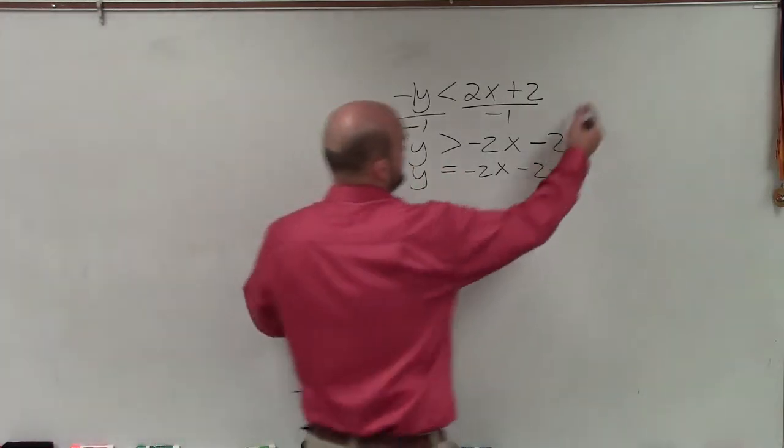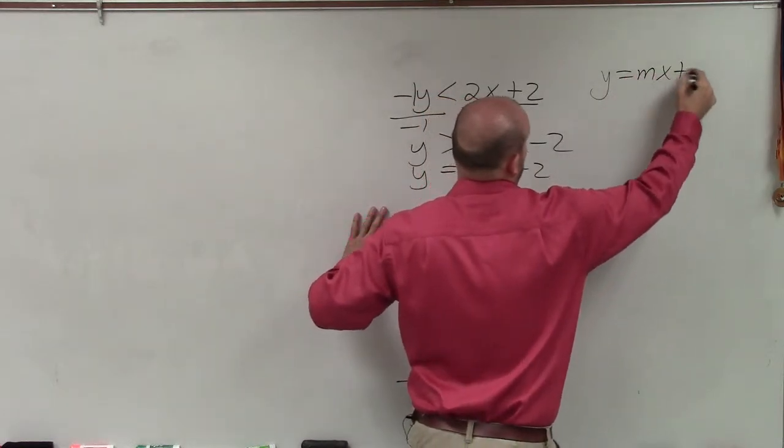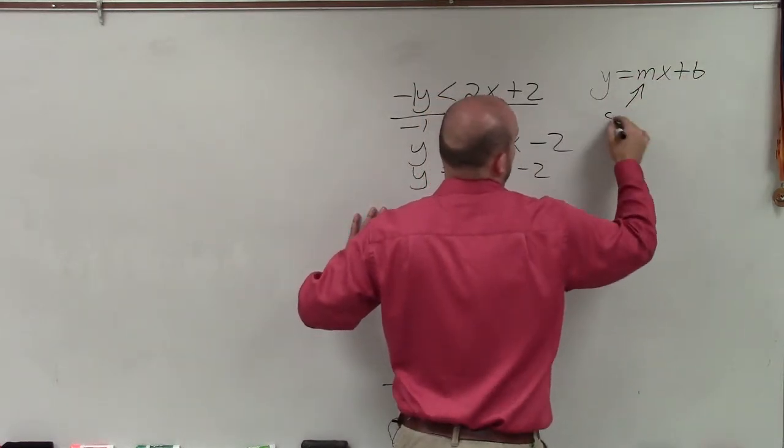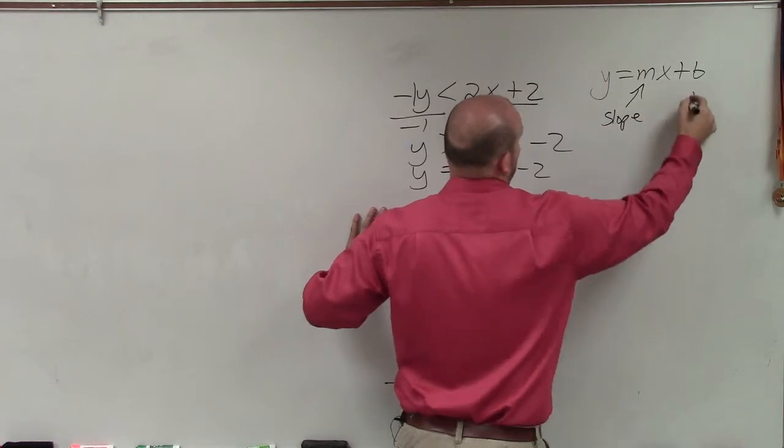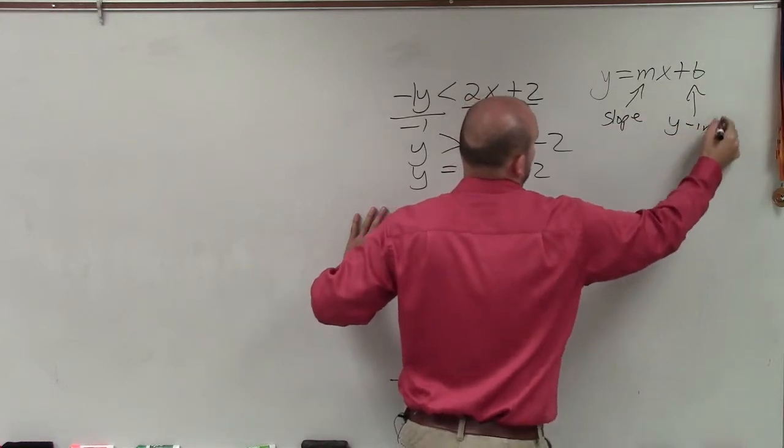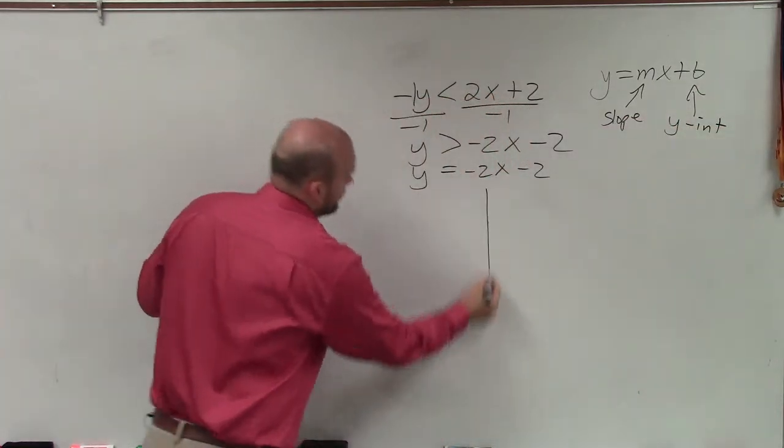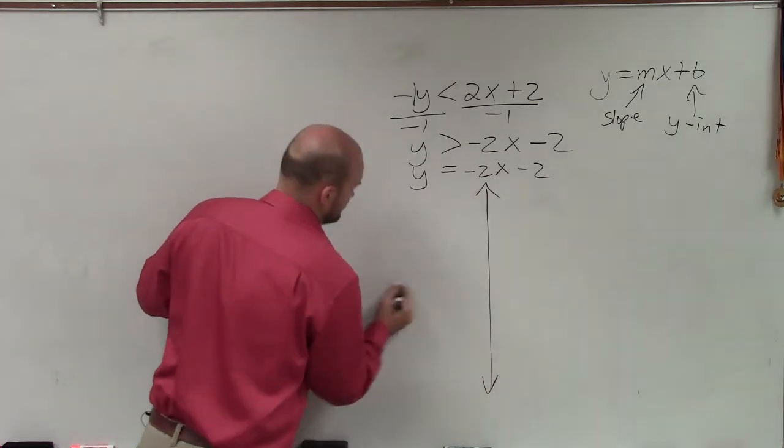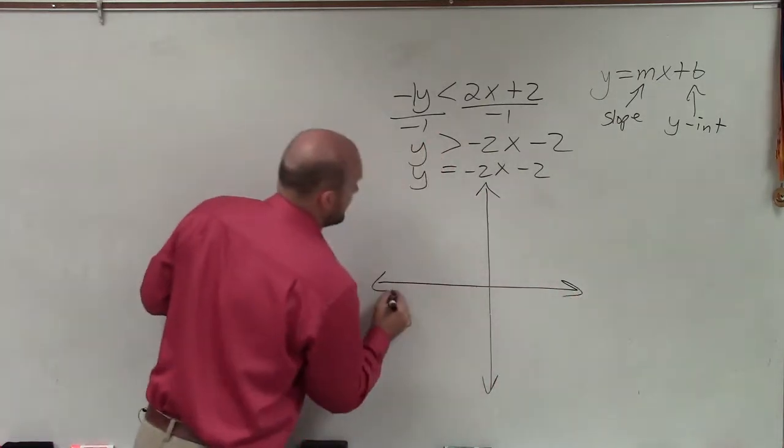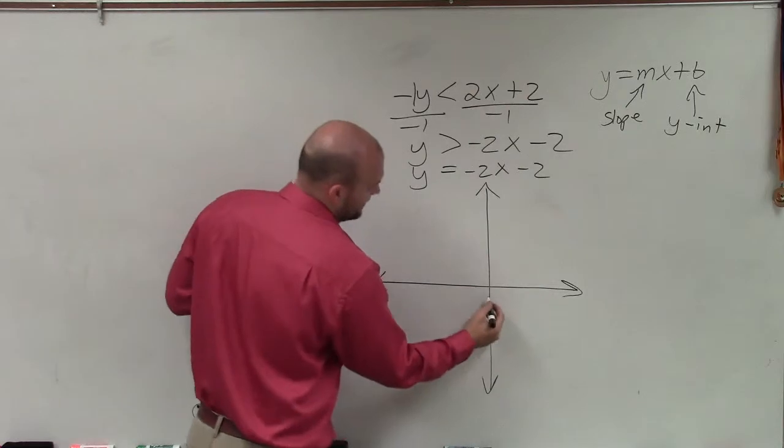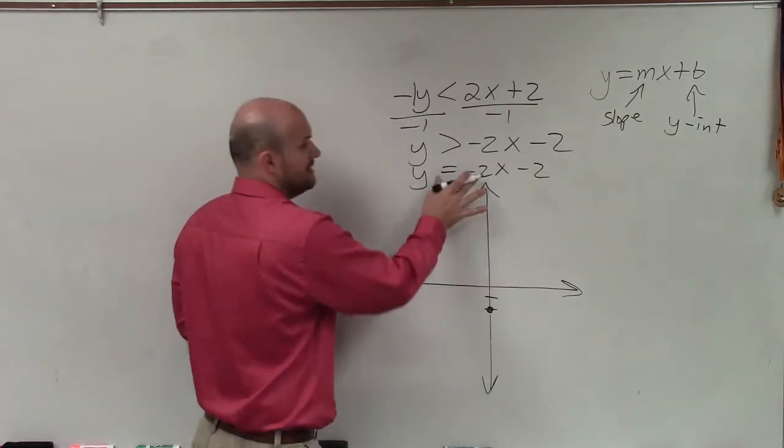So when looking at this, we need to make sure we remember y equals mx plus b, where m represents the slope and b represents the y-intercept. So to go and graph this, I'm going to go to my y-intercept, which is at negative 2, and I'm going to make a nice big dot.